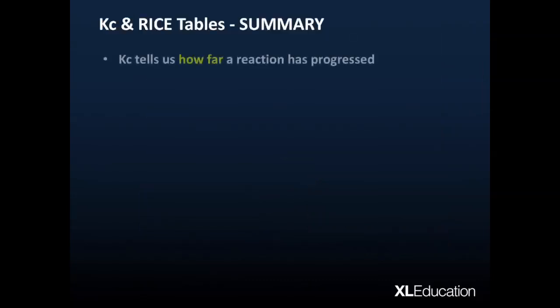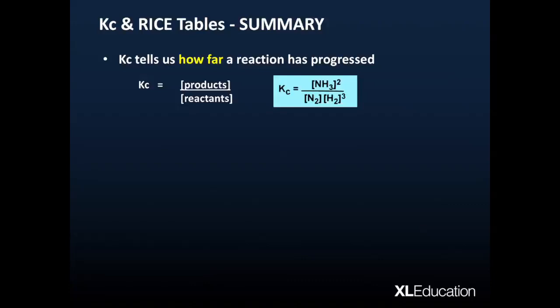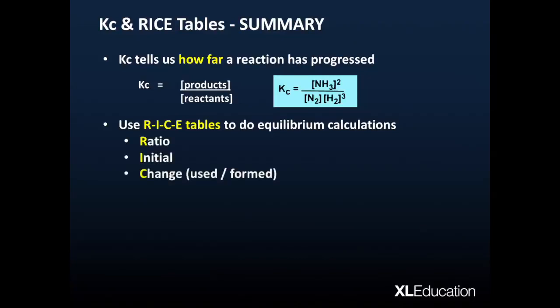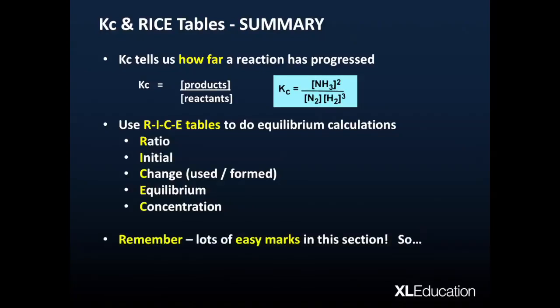Summary of what we've covered so far. We've got Kc, which tells us how far a reaction has progressed. Then considering what Kc looks like. Remember, it's an equation which informally is the concentration of products over the concentration of reactants. But we specifically would do an example like the one we did for ammonia. Then we used RICE tables to do our equilibrium calculations where R was ratio, I was for initial, C was for the change, how much was used or formed, E was for how much we had at equilibrium. And then we did the chicken bit, the concentration. And finally, remember that there's lots of easy marks in this section. Filling up that table is super easy. So there's plenty of marks to get. Key thing for you to do now is practice, practice, practice. So good luck with that. Cheers.